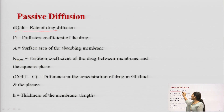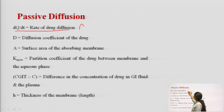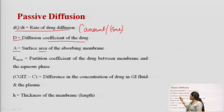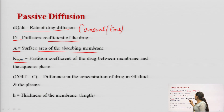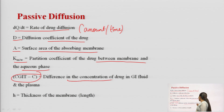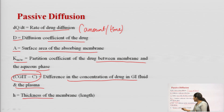In this equation, dq/dt is the rate of drug diffusion, represented as amount per time. D is the diffusion coefficient of the drug. A is the surface area of the absorbing membrane. Km/w is the partition coefficient of the drug between the membrane and the aqueous phase. H is the thickness of the membrane, represented in length. And Cgit minus C is the concentration gradient between GIT fluid and plasma.